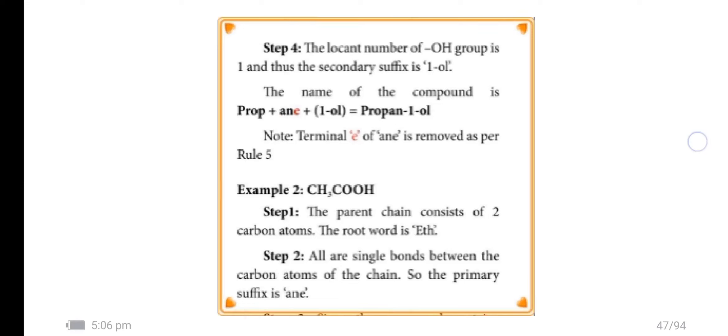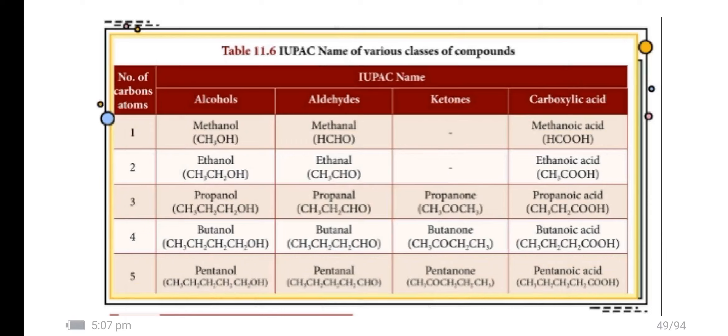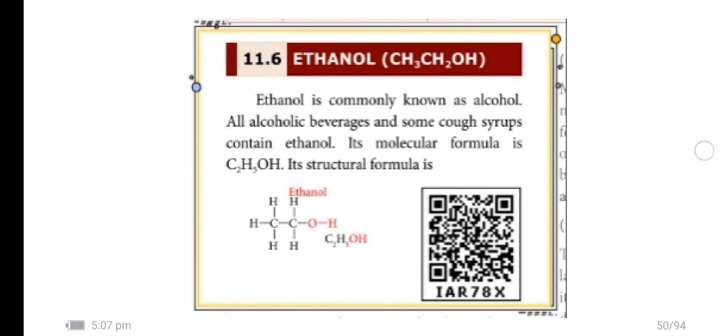Note: Terminal 'e' of 'ane' is removed as per Rule 5. Example 5: CH3-CH2-COOH. This table is very important. I'm going to add a 5-mark question. Thank you.